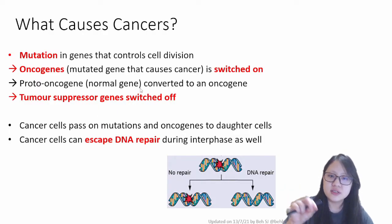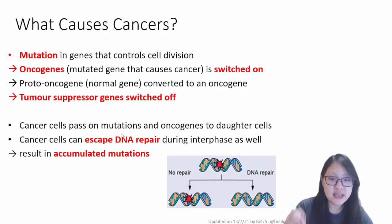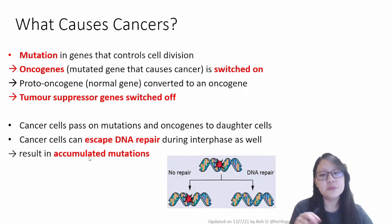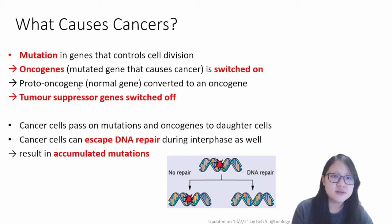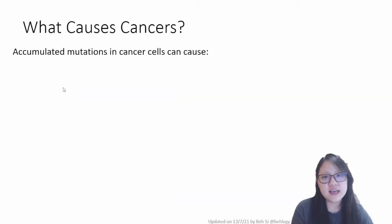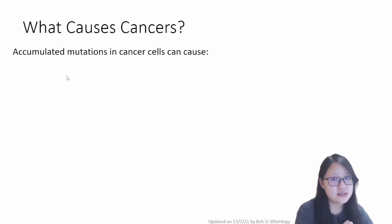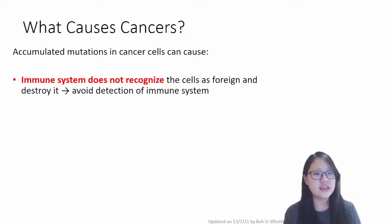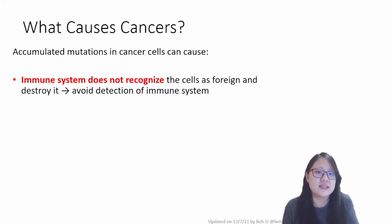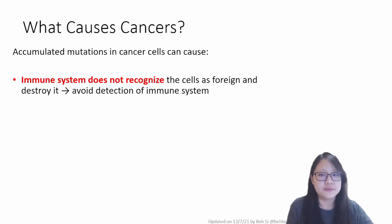From one or two initial mutations in a gene that controls cell activation, since checkpoints are disabled, this can result in even more accumulated mutations over time. It may start with one, two, three, or four mutations, but after many rounds of cell division, cancers can develop extra features. Accumulated mutations in cancer cells can cause evasion of the immune system — the immune system cannot recognize cancer cells as foreign or problematic and destroy them; it thinks they are completely normal.